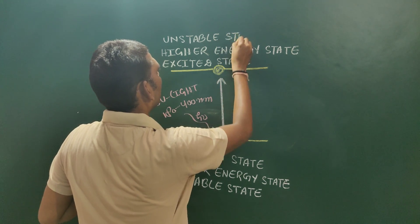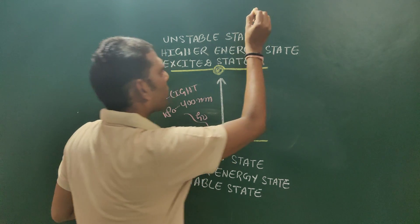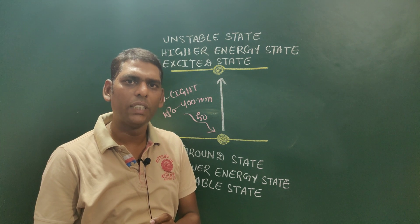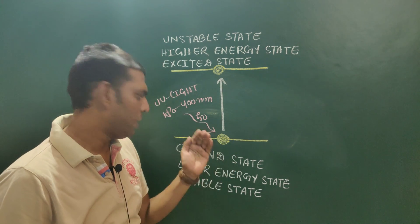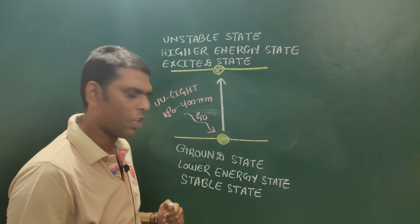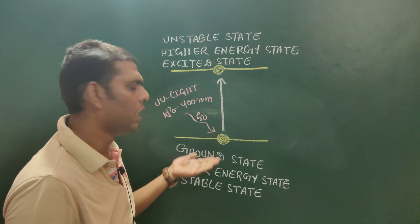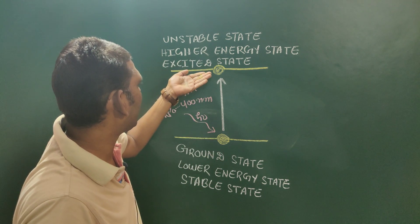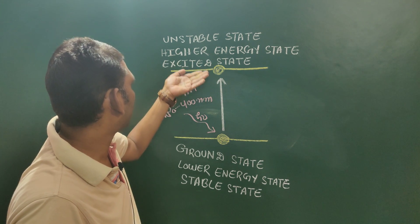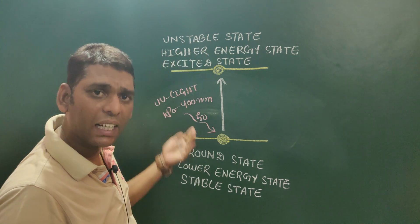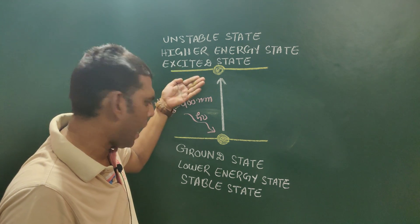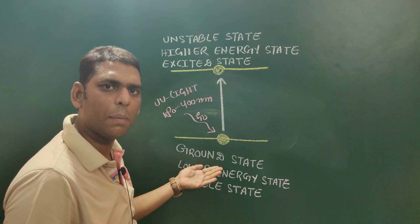There is a tendency of every molecule that it wants to be stable, wants to attain a stable state. So after absorption of energy, the molecule reaches an excited state, which is an unstable state, and to attain stability again, the molecule leaves its excited state and starts coming back to its ground state.